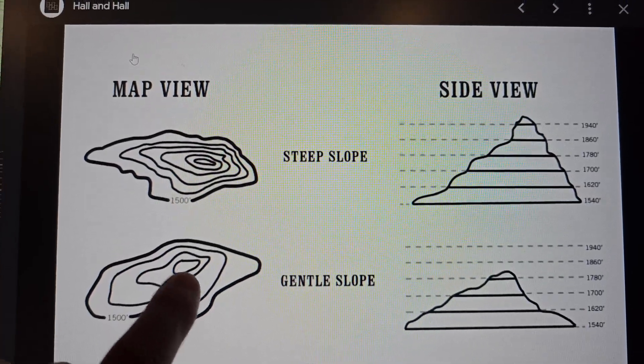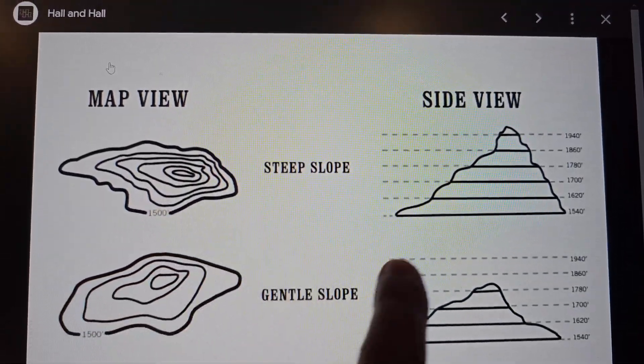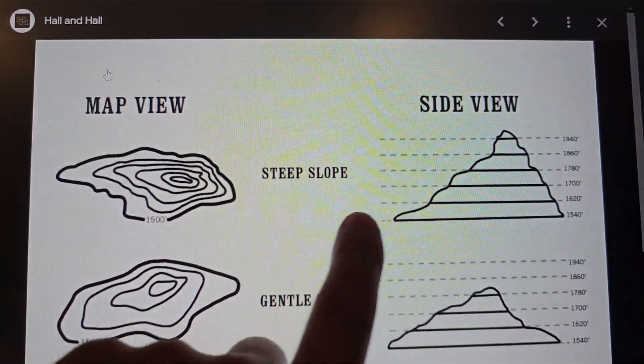Notice how these are further apart, these are close together. Steep slope. See? Now we're gaining more elevation quickly.